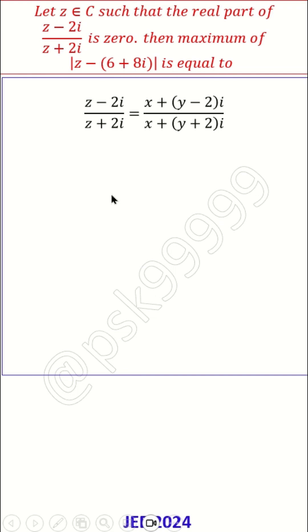First, let z equal x plus yi. Then (z-2i)/(z+2i) is equal to this value. To make it a complex number, I have to remove the complex part from the denominator, which I can do by multiplying the conjugate. So this is what I will get if I multiply.